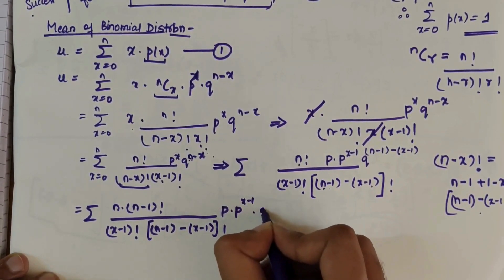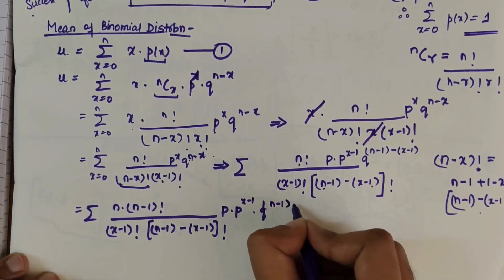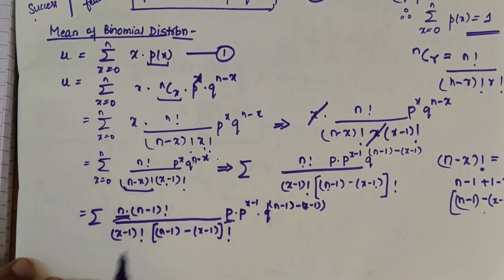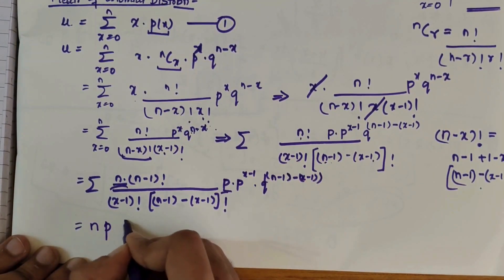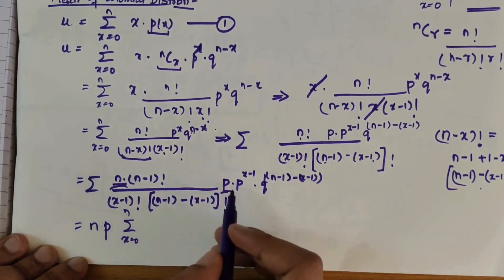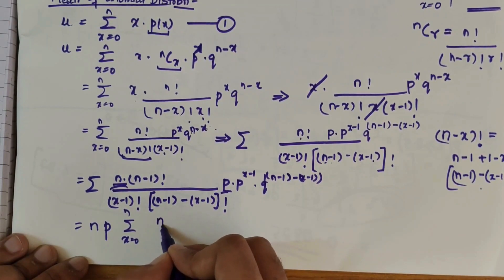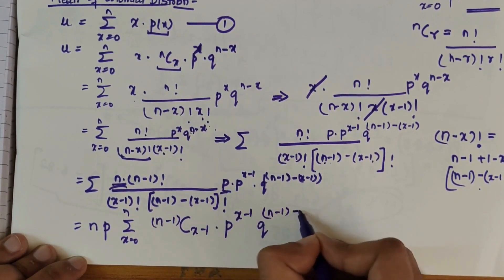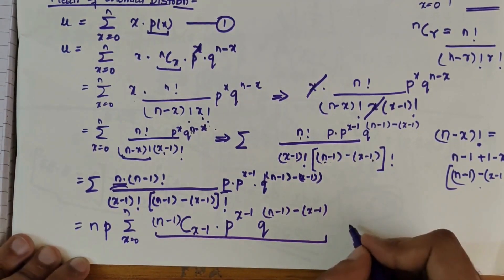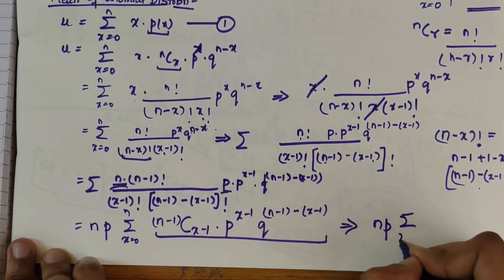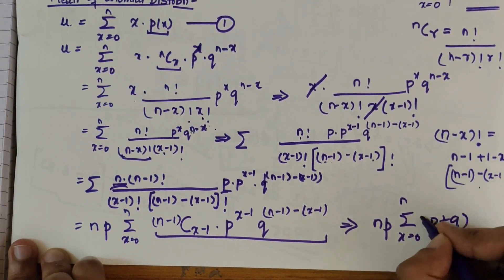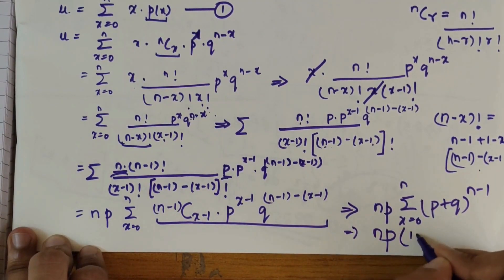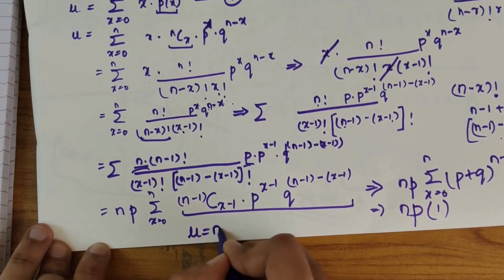We have P times P^(X-1) and Q^(N-1-(X-1)). Now we can take N and P outside the summation. The remaining terms form N-1 C (X-1) times P^(X-1) times Q^(N-1-(X-1)), which sums to (P+Q)^(N-1). Since P+Q equals 1, we get N times P times 1, so the mean equals NP.